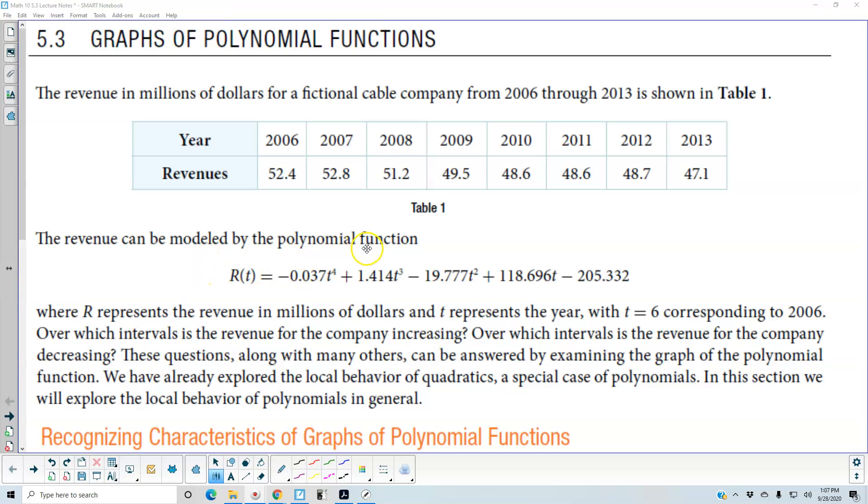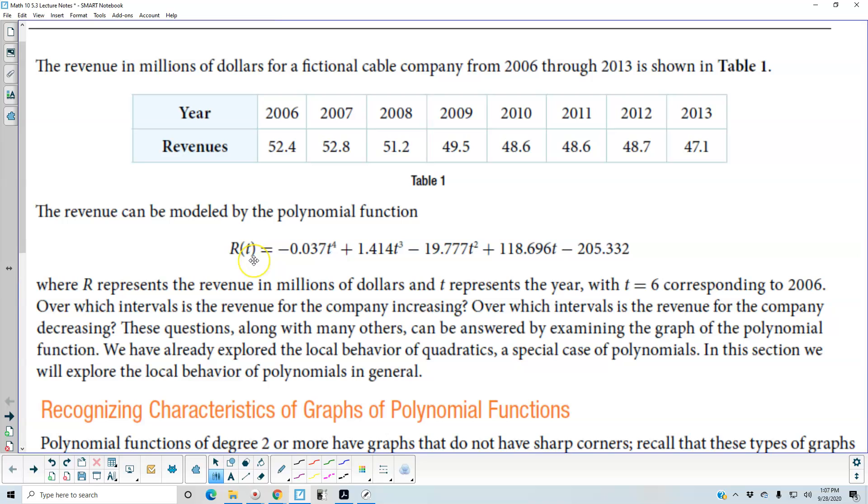Now the revenue can be modeled by the polynomial function. So here's a fourth-degree polynomial function. Now it's in terms of R and T, so R here represents the revenue in millions of dollars, and T represents the year, with T equal to 6, which would correspond to 2006. Now over which intervals is the revenue for the company increasing? Over which intervals is the revenue for the company decreasing?